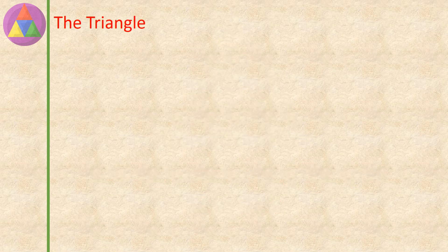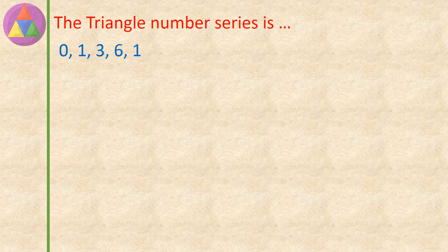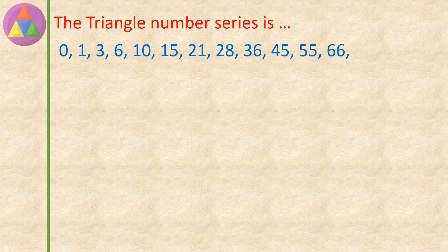The triangle number series is 0, 1, 3, 6, 10, 15, 21, 28, 36, 45, 55, 66, 78, 91, and so on.